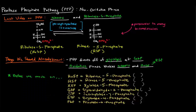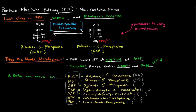Now we talk about the non-oxidative phase. I'll be referring to molecules by abbreviations. These are all monosaccharides: Ru5P and R5P — ribulose 5-phosphate and ribose 5-phosphate — are both five-carbon molecules. The others are X5P (xylulose 5-phosphate), G3P (glyceraldehyde 3-phosphate), S7P (sedoheptulose 7-phosphate), E4P (erythrose 4-phosphate), and F6P (fructose 6-phosphate). Most important is recognizing how many carbons each molecule has, as that will help you understand the pathway.